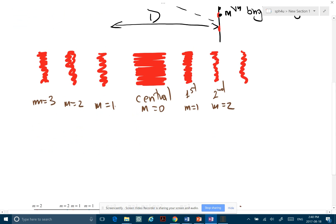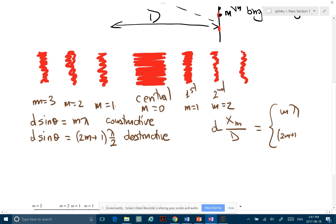Let's write the equation before we go any further. Remember that D sine theta is equal to M lambda for constructive, and D sine theta is equal to 2M plus 1 lambda over 2, and this is for destructive. And of course, using a small angle approximation, we have D X_M over D equal to either M lambda or 2M plus 1 lambda over 2. This is for constructive, this is for destructive. Bright, dark.